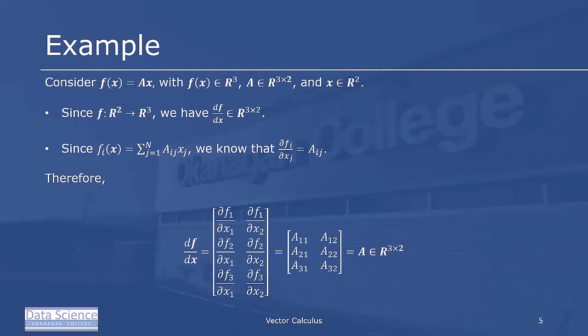Now, fi of x is simply going to be the entry where we've completed the matrix multiplication. So it's the sum where j goes from 1 to n of aij xj. And so if you look at that sum and you differentiate with respect to xj, dfi dxj is going to be the ijth entry.